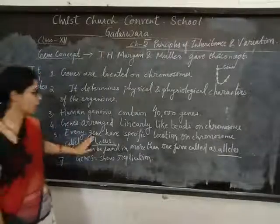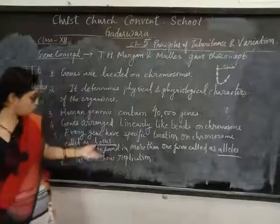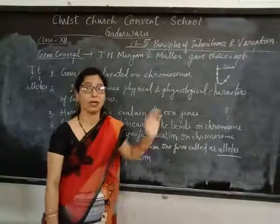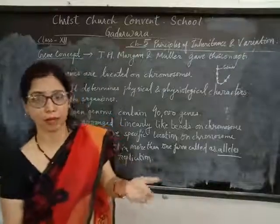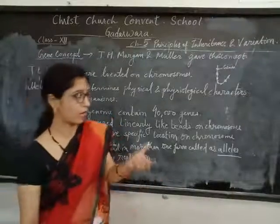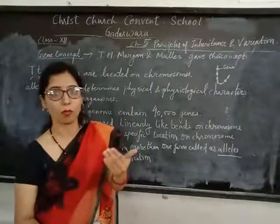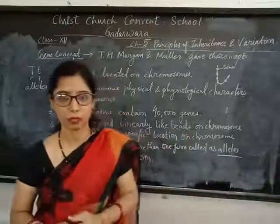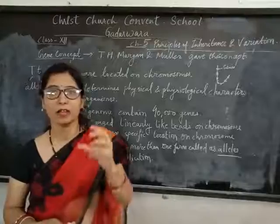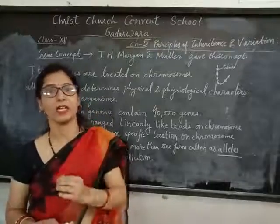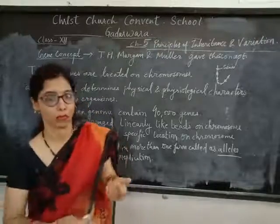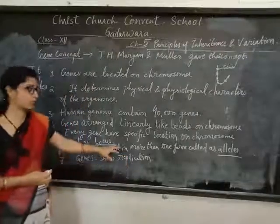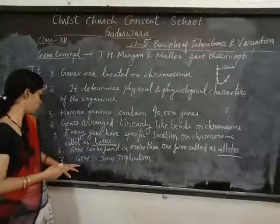So, ek hi gene ki more than one form ho sakti hai, inko hum alleles kehte hai. Multiple alleles ka example bhi aap padhenge, and that is the blood group. As you know, kisi ka O hota hai, A hota hai, ya B positive hota hai - toh yeh different alleles hain us blood group gene ki. This is the example of multiple alleles.